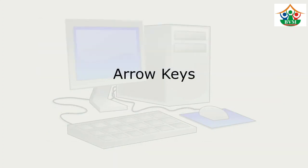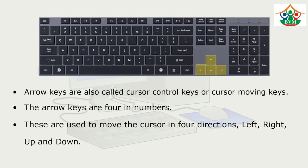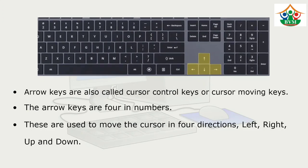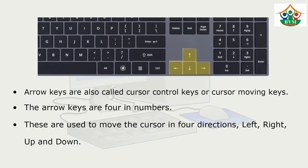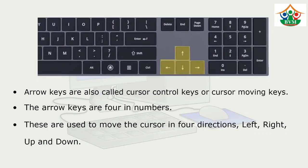The arrow keys are also called cursor control keys or cursor moving keys. The arrow keys are four in number. These are used to move the cursor in four directions: left, right, up, and down.